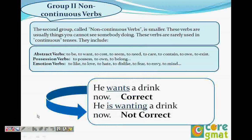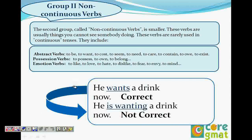Non-continuous verbs are those verbs which you cannot see people doing. Abstract verbs, possession verbs, and emotion verbs are non-continuous verbs. For example: to be, to want, to cause, to seem, to need, to care, to own. In possession verbs: to possess, to own, to belong. In emotion verbs: to love, to hate, to dislike, to fear.